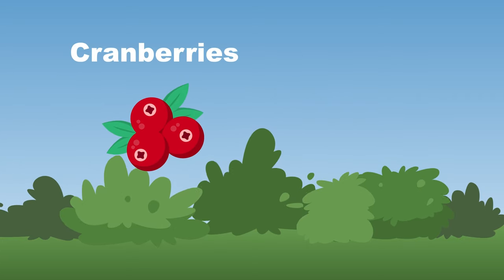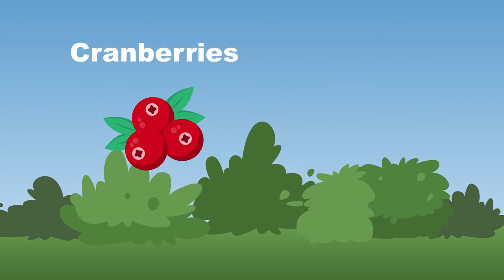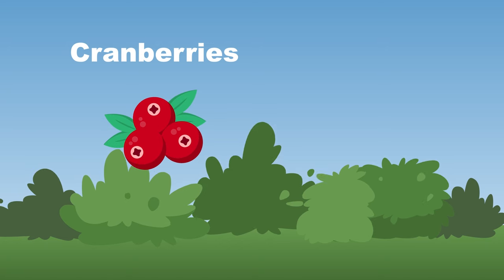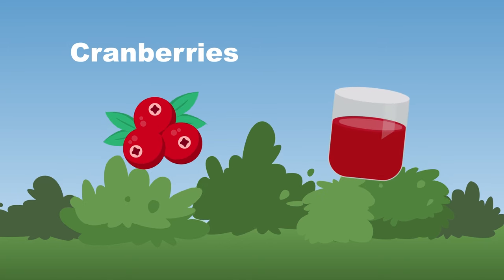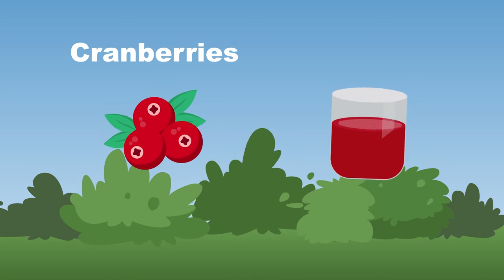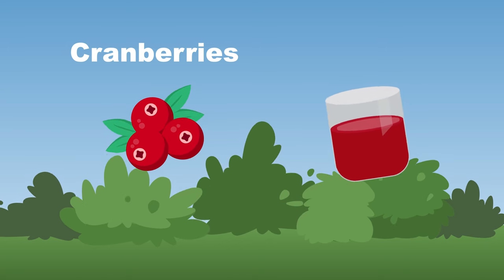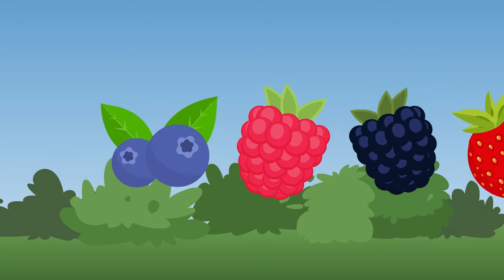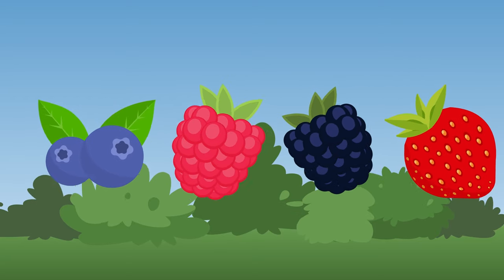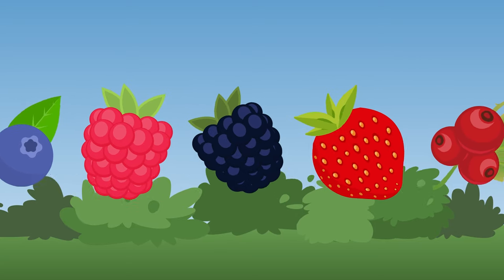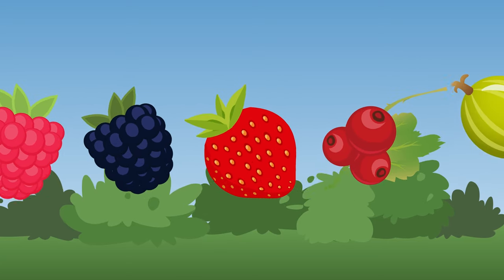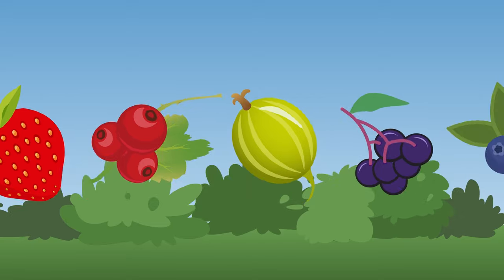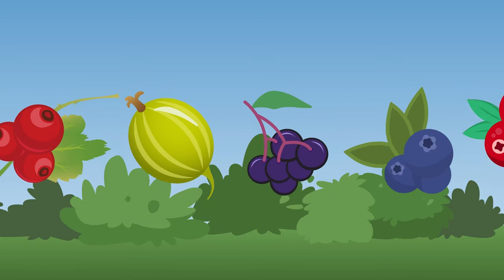Cranberries grow on low trailing bushes and are typically red. Used in sauces, juices, and side dishes for a holiday spread. What kind of berries grow on bushes? These are the most common berry bushes, now come and sing along.